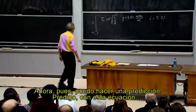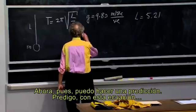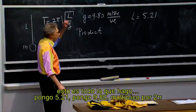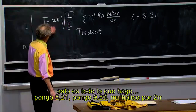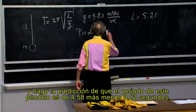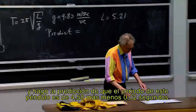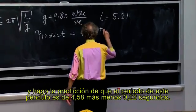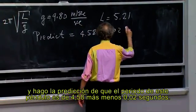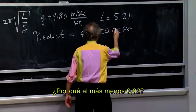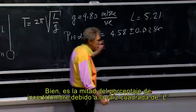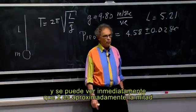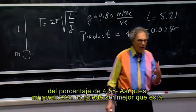So now I can make a prediction. Using this equation, I put in 5.21 for L, I put in 9.80 for G, I multiply by 2 pi, and I make the prediction that the period of that pendulum is 4.58 plus or minus 0.02 seconds. Why the plus or minus 0.02? That is the half-a-percent uncertainty due to the square root of L. You can immediately see that 0.02 is about half a percent of 4.58. So my prediction can be no better than that.